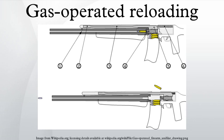Gas operation is a system of operation used to provide energy to operate auto-loading firearms. In gas operation, a portion of high-pressure gas from the cartridge being fired is used to power a mechanism to extract the spent case and chamber a new cartridge.